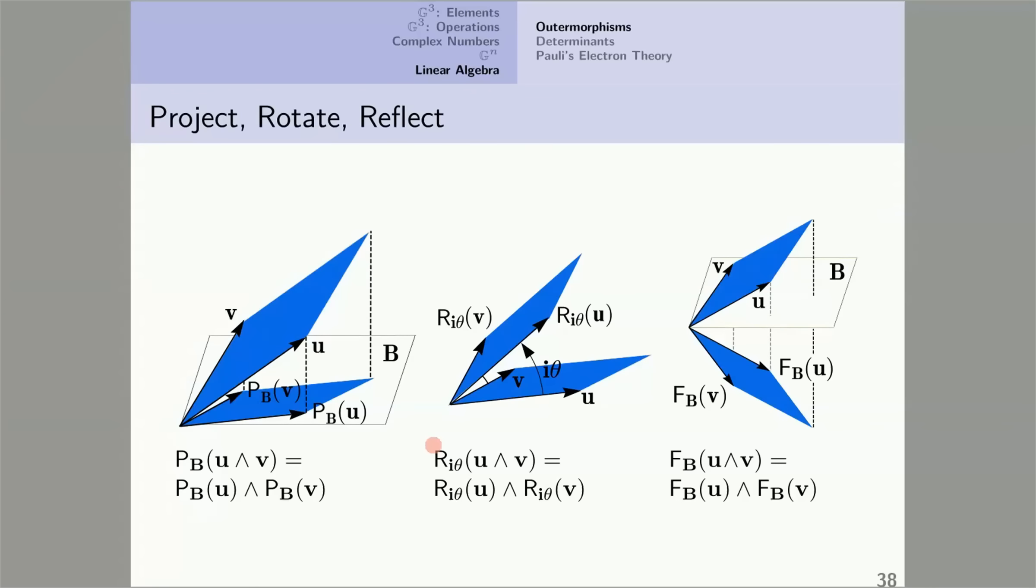Here we have the other two operations from the last slide. A similar thing happens with rotations. To rotate U outer V by I theta, I take the outer product of the rotation of U with the rotation of V. And a similar formula obtains for reflections, but I won't go through it.